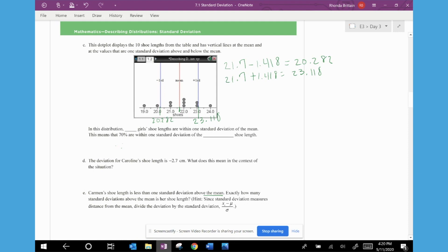So in this distribution, blank girl's shoe lengths are within one standard deviation of the mean. So we need to actually give a number there. So we're going to count values or data values between 20.282 and 23.118. Looks like we have all of these dots and there are seven of those. This means that 70% are within one standard deviation of the mean shoe length. So if I take seven out of the 10 girls, that's where we're getting the 70%.